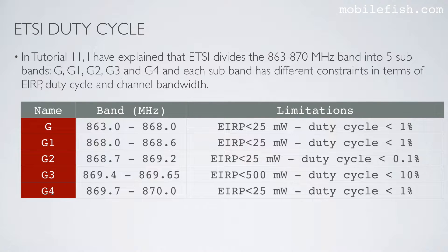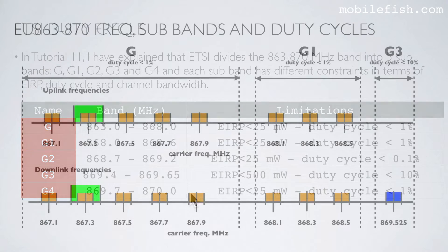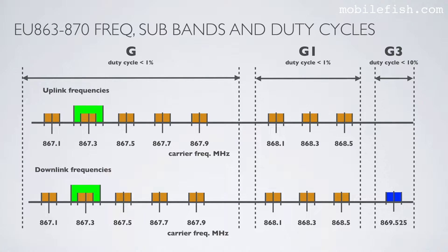In tutorial 11 I explained that ETSI divides the 863 to 870 MHz band into 5 subbands: G, G1, G2, G3, and G4. Each subband has different constraints in terms of EIRP, duty cycle, and channel bandwidth, as you can see in this table. Here is a better overview showing the different subbands and their corresponding duty cycles.